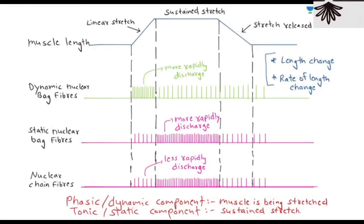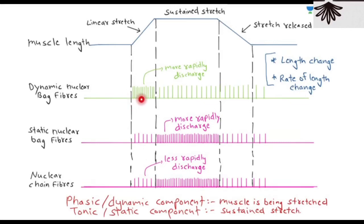Looking at the response diagram, muscle length is divided into three phases: stretch, sustained stretch, and release. For nuclear bag fibers — dynamic fibers discharge more rapidly during sudden stretch, responding to the rate of change of muscle length, i.e., velocity. Static nuclear bag fibers and nuclear chain fibers discharge more rapidly during the sustained stretch phase, not during sudden changes in length.